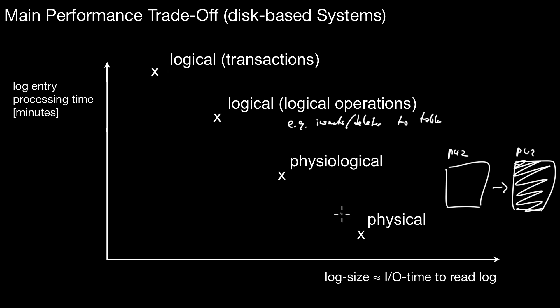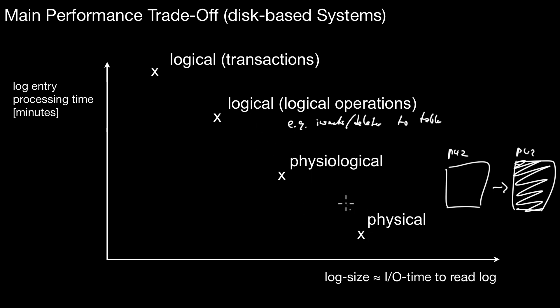In general, you get a trade-off like that. For a disk-based system, typically we are in the space of physiological and physical logging — those are the log records often used. For a special case we will revisit later on, there's also some logical logging going on. The variant of logging I will introduce in follow-up videos does all three, but most of the records are physiological or physical.